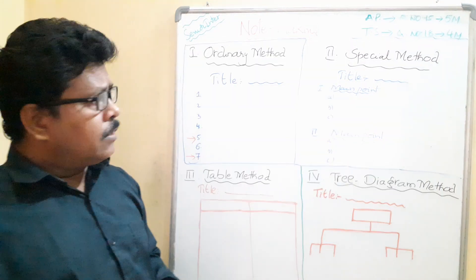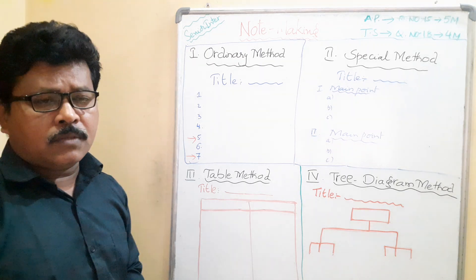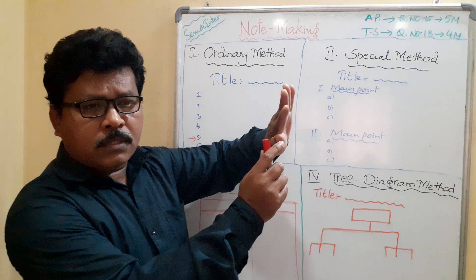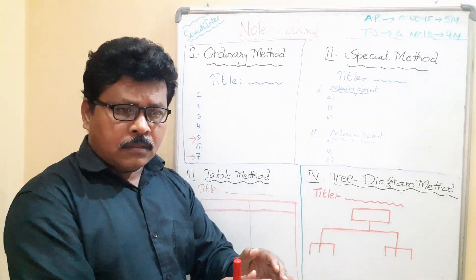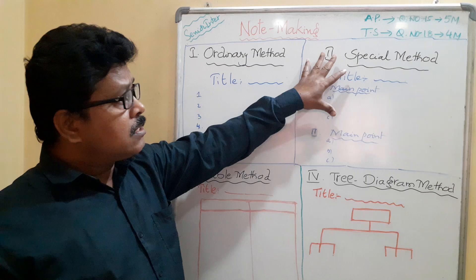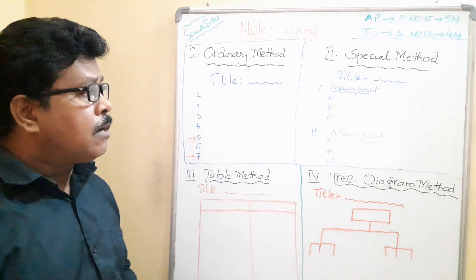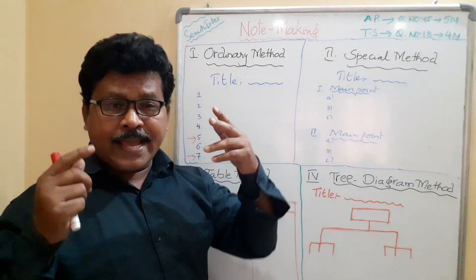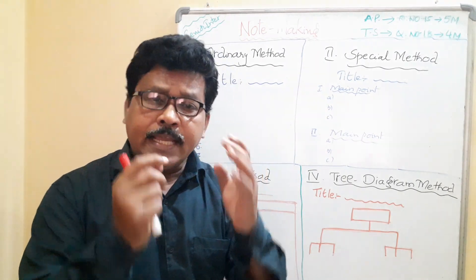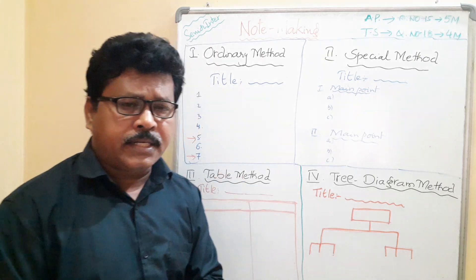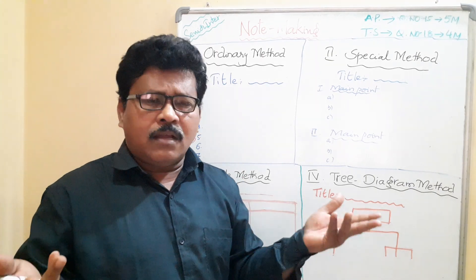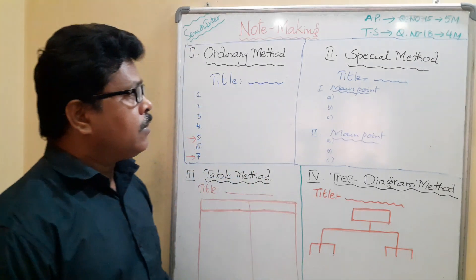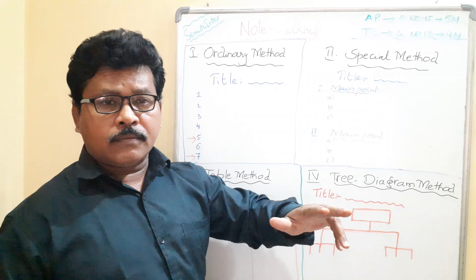The second method is the special method — a more refined and decorated approach. When each paragraph is about a different concept, you can use this method. For example, if the topic is global warming, use a catchy, eye-catching title like 'Global Warming is Global Warning' rather than a plain, ordinary title.